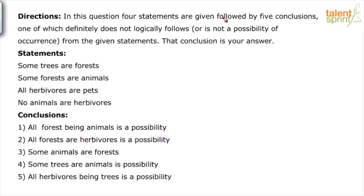In this question, four statements are given followed by five conclusions, one of which definitely does not logically follow or is not a possibility of occurrence from the given statements. That conclusion is your answer. So what you need to remember is we are not trying to find the right conclusion — our job is to find the wrong conclusion. Out of five, only one is wrong, so we have to identify which one.